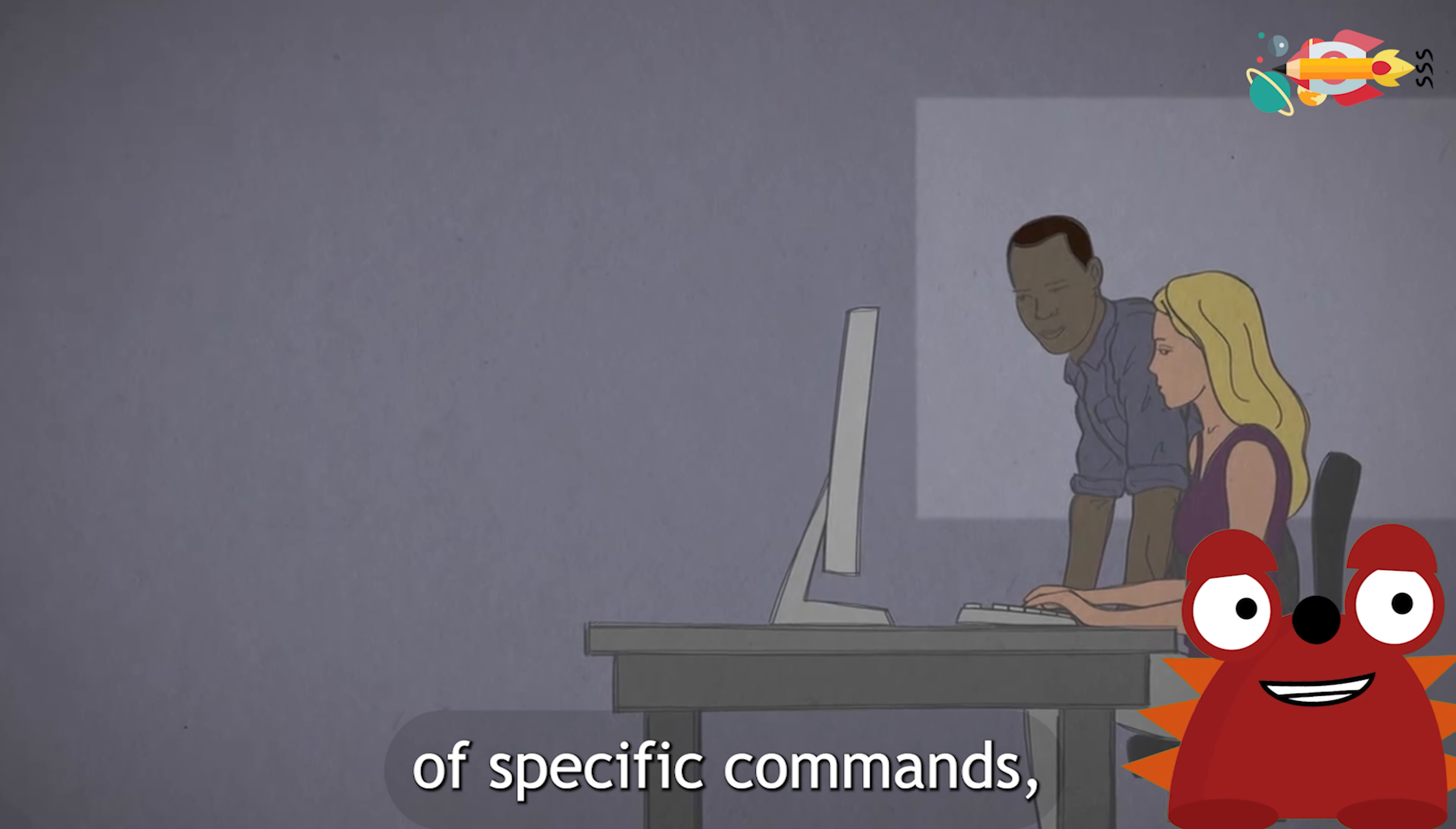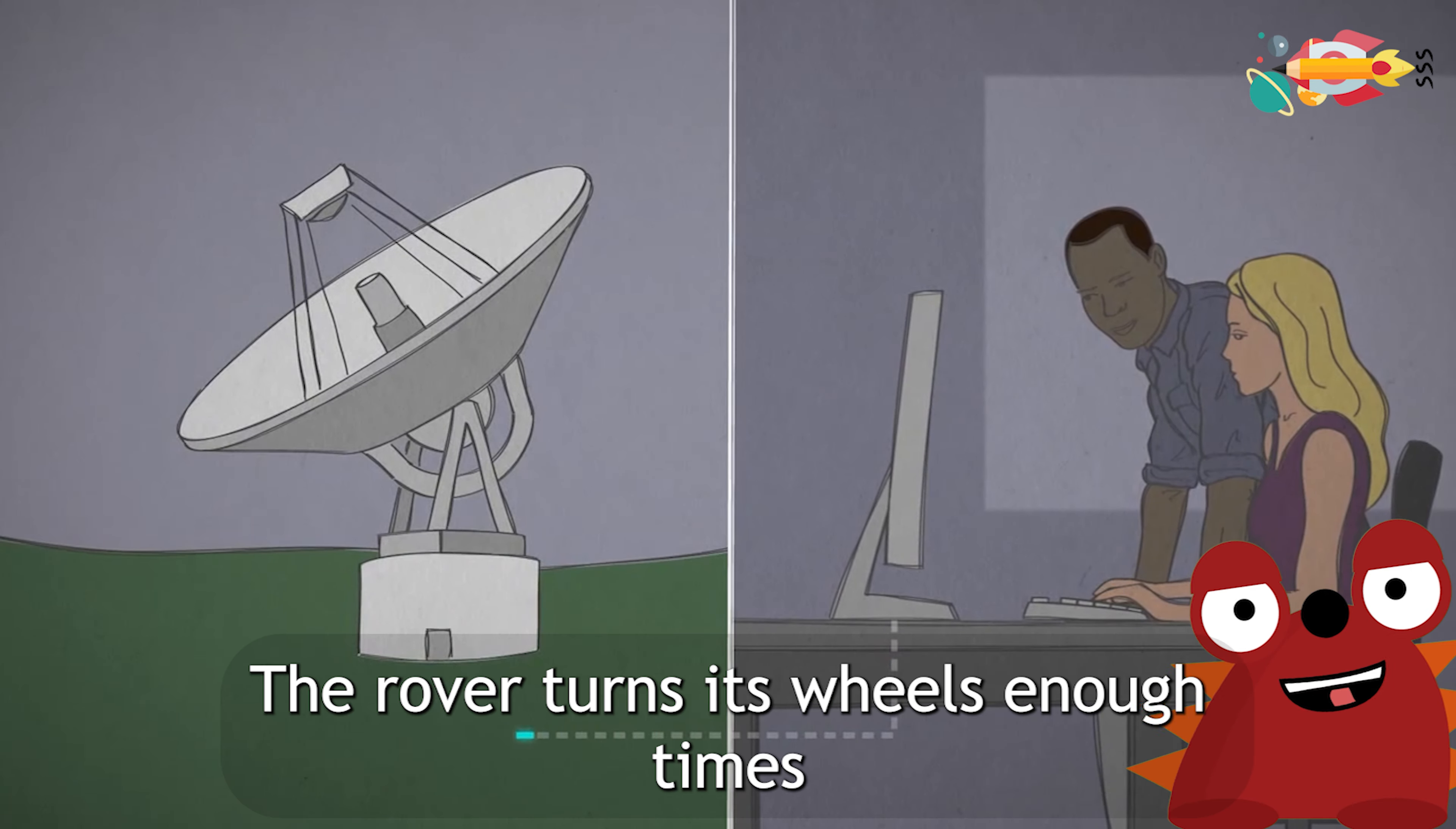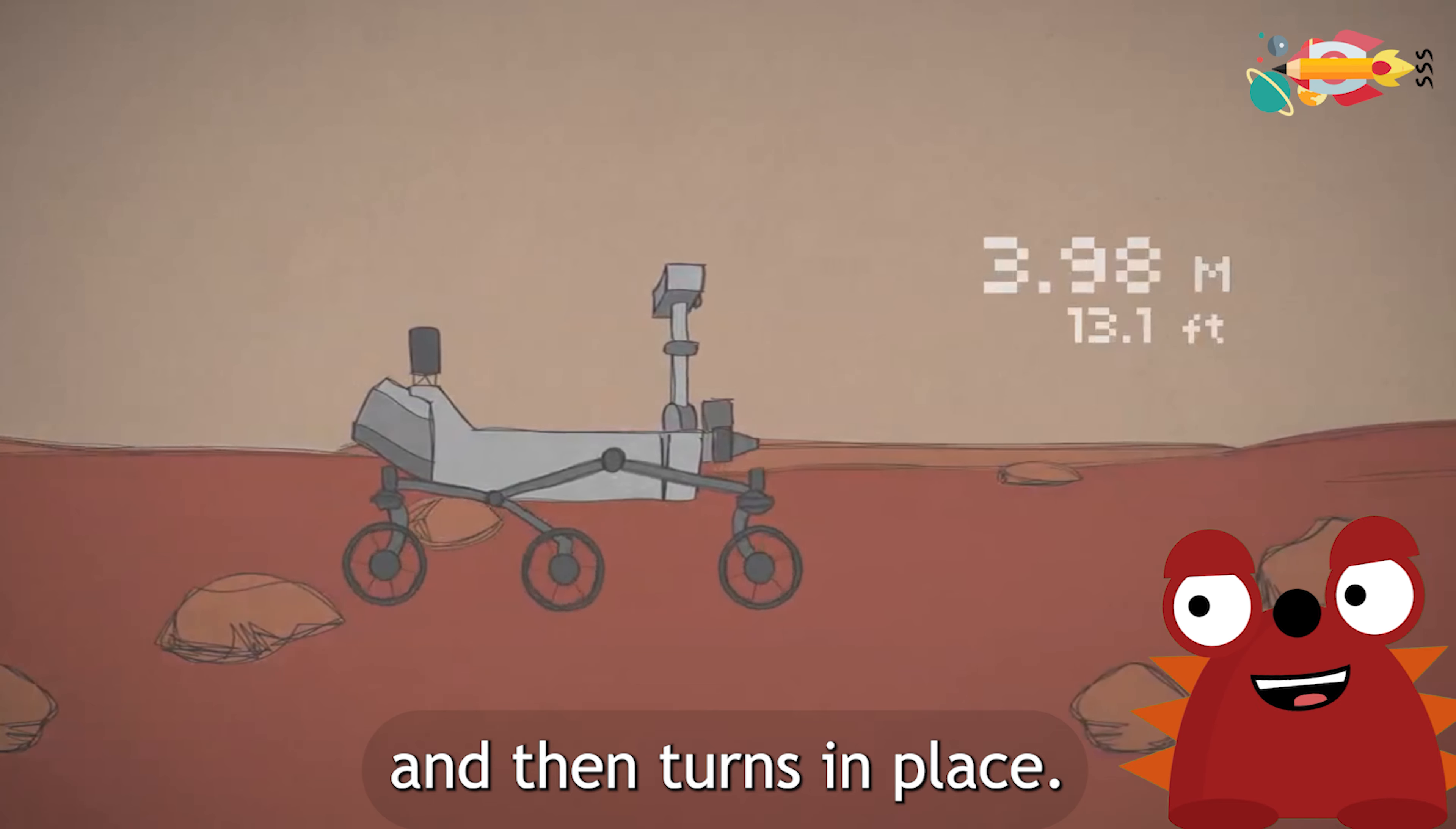They can send a string of specific commands like drive forward five meters, then turn right 90 degrees. The rover turns its wheels enough times to add up to five meters, and then turns in place.